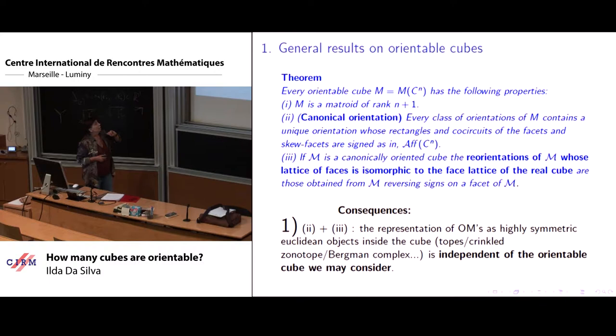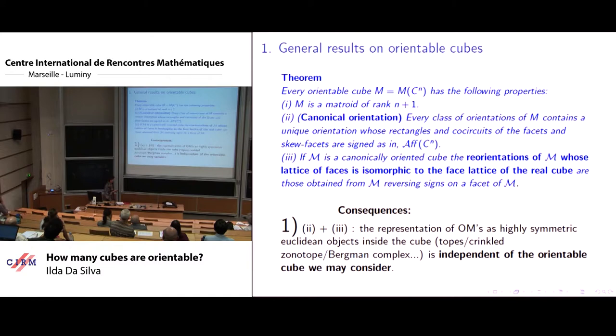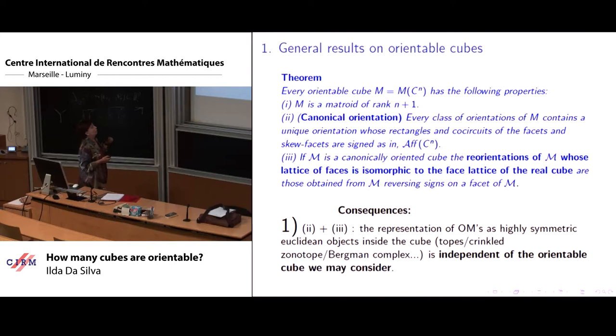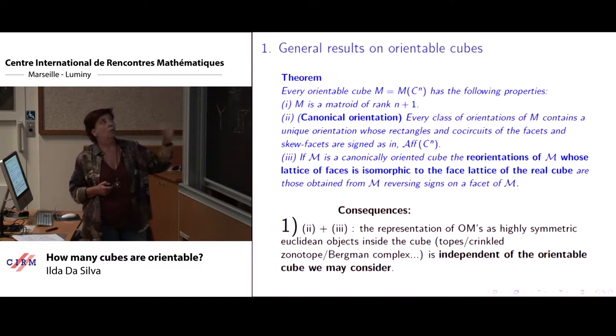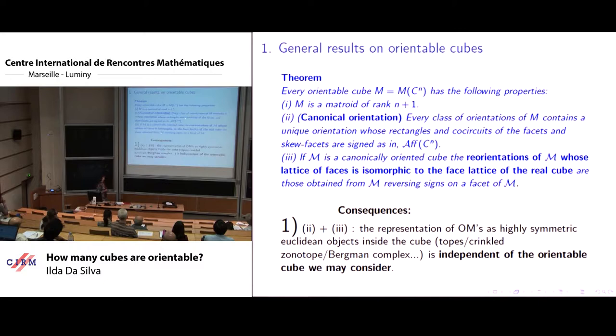Concerning general results, they are condensed here. First of all, every matroid has the expected rank. Second, every orientable cube has a class of orientations, a canonical class of orientations, where the rectangles and the co-circuits of the facets and skew facets are assigned as oriented as in the real affine cube. Whatever cube we start with, we can find this canonical orientation.